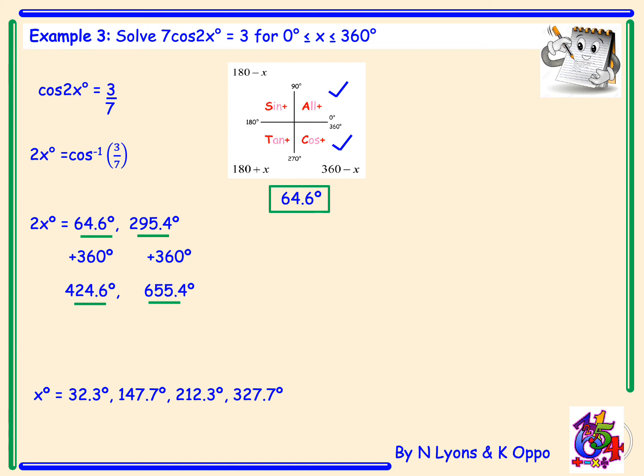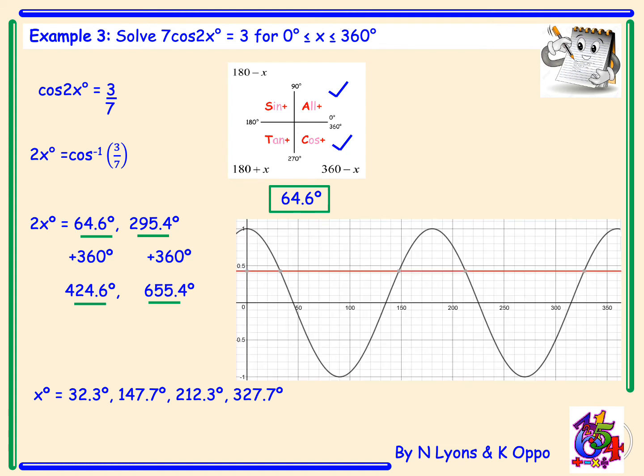Those are the 4 angles where cos(2x) equals 3 over 7, and here is the graph to show you, with the 4 angles indicated.